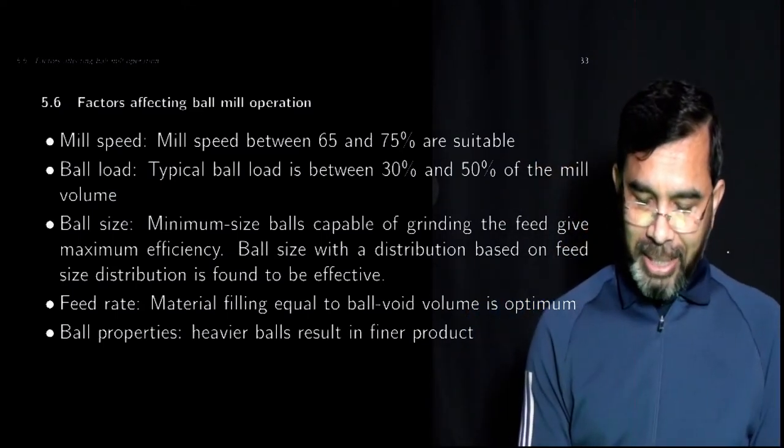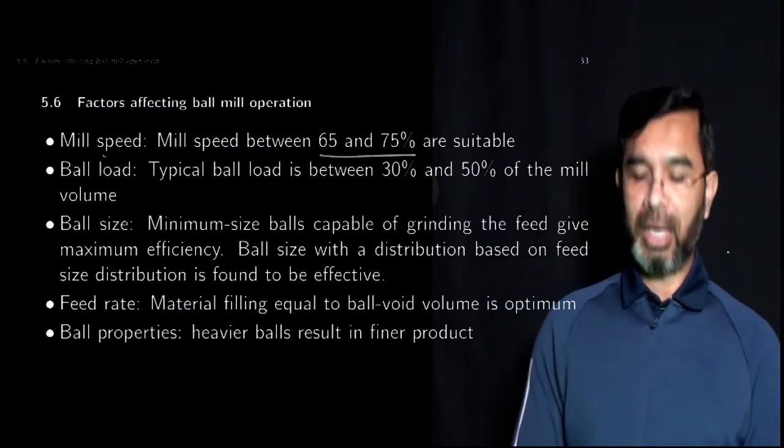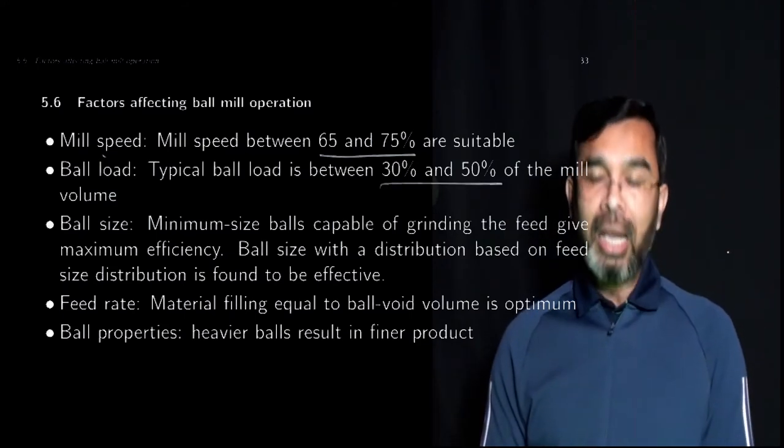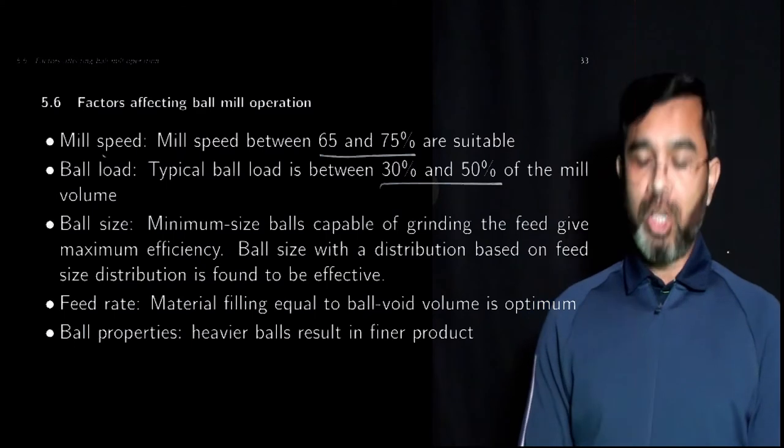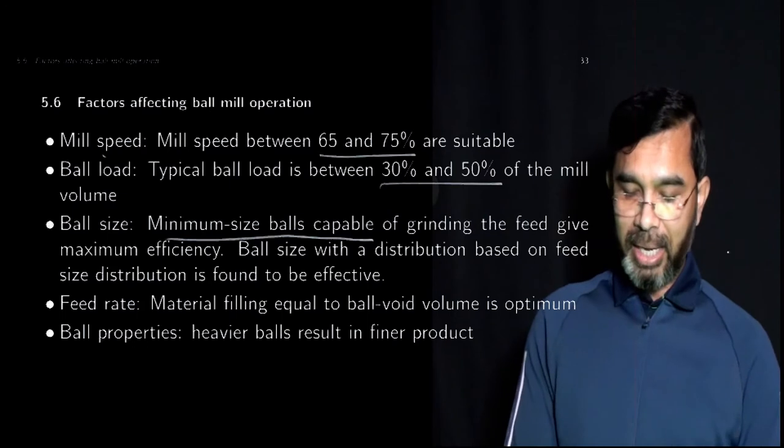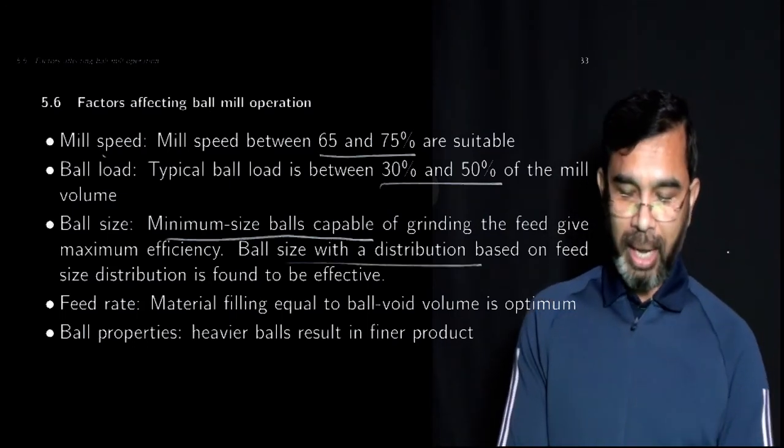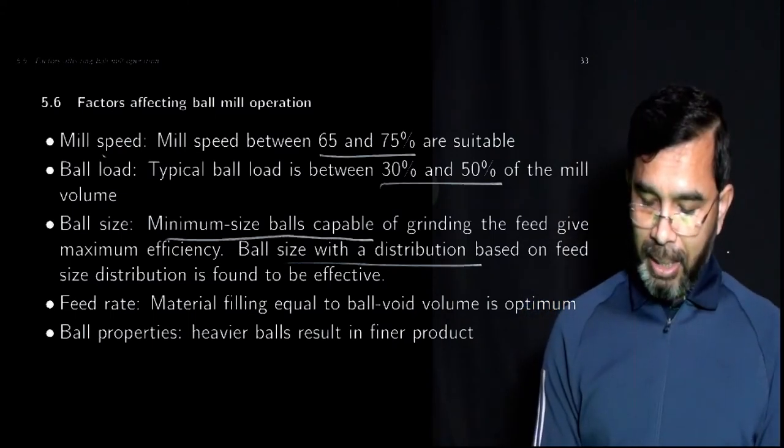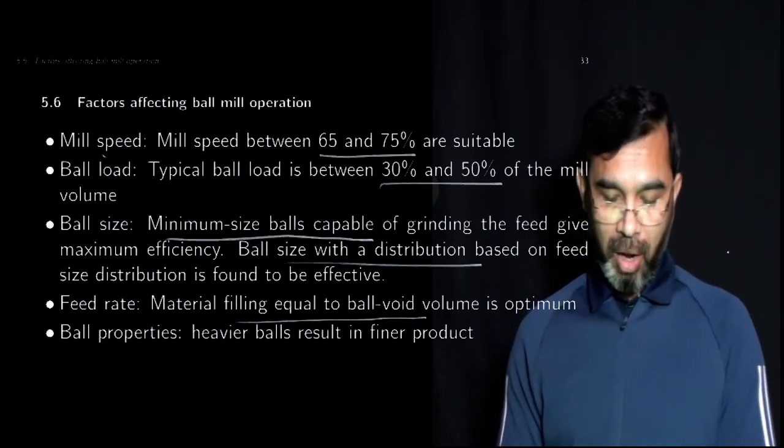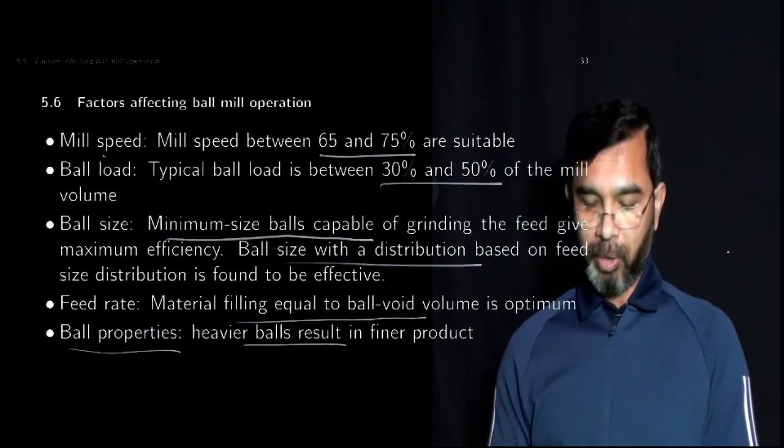Regarding the mill speed, typically it's operated between 65 to 75 percent of the critical speed. The ball load is typically between 30 to 50 percent of the mill volume. For ball size, the minimum size ball that's capable of doing the required grinding is preferred. Ball size with a distribution based on the feed distribution can be more effective. Feed rate is typically equal to the ball void volume, which is found to be optimum for many operations. For ball properties, heavier balls result in finer products.